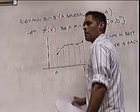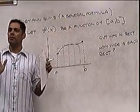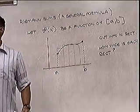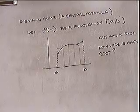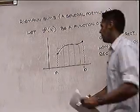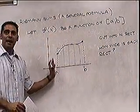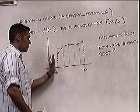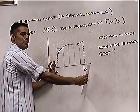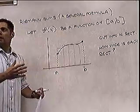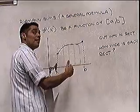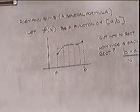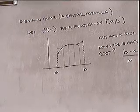In the problem you had at home with x cubed, the interval was 0 to 2, and we cut it into n pieces, so each one was 2 over n. But here I'm starting at a and going to b. If it went from 1 to 4, the width would be 3; from 2 to 6, it would be 4. So b minus a - that's how wide the whole thing is. And then you're cutting it into n rectangles, so the width of each rectangle is b minus a over n. That's the width of the whole thing divided into n equal parts.